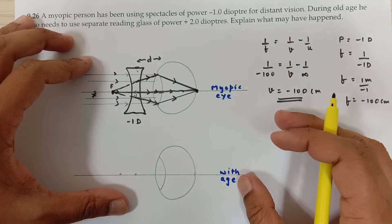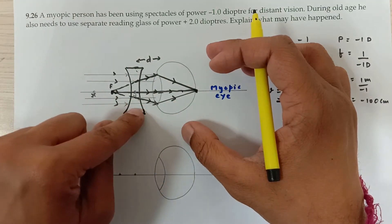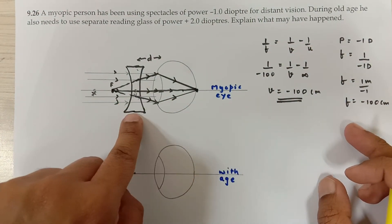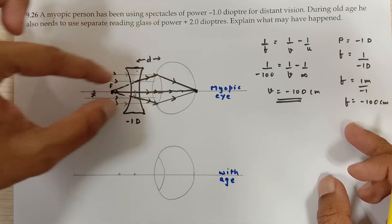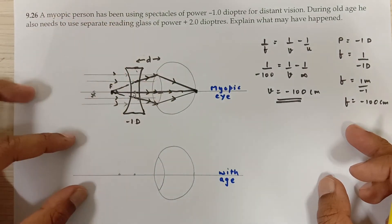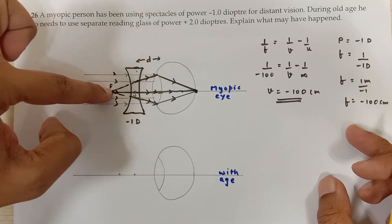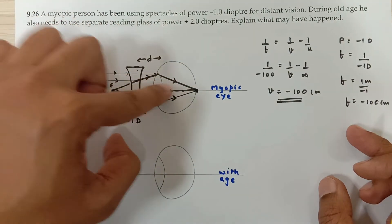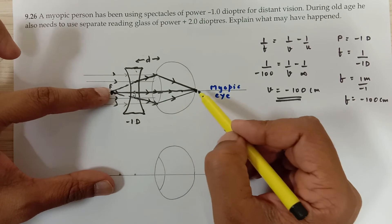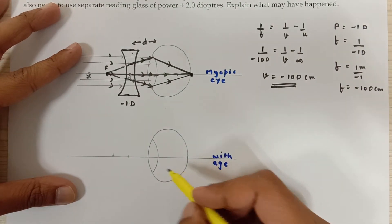The key logic is: the focus of the concave lens must be at the far point of the myopic eye. So beyond 100 centimeters without spectacles this person can't see, but with spectacles he can see objects even at infinity — the object at infinity forms an image at −100 cm, that image acts as the object for his eye lens, and the final image is formed on the retina.